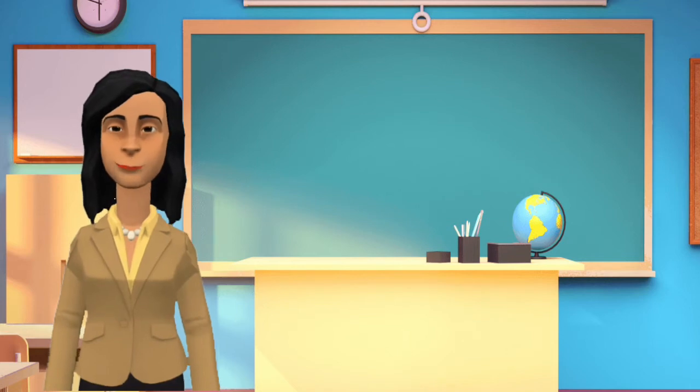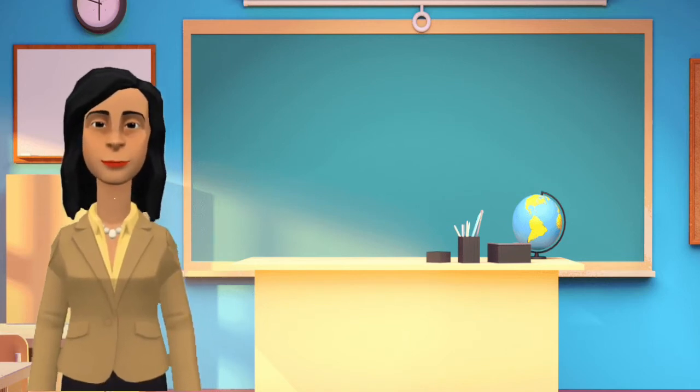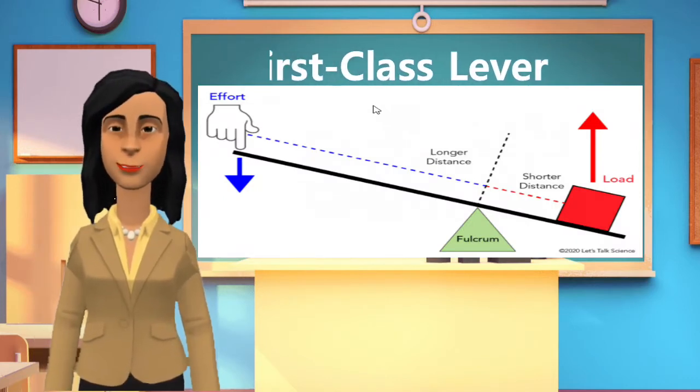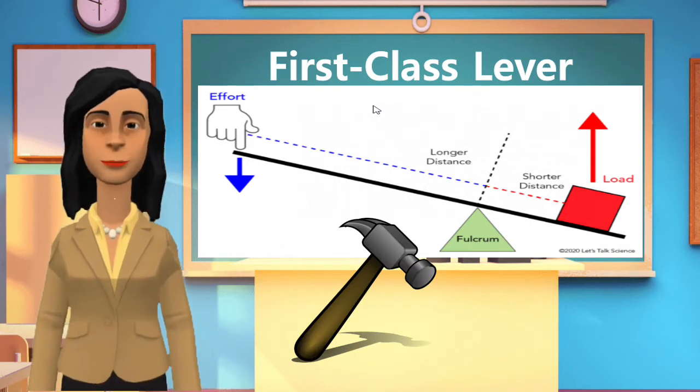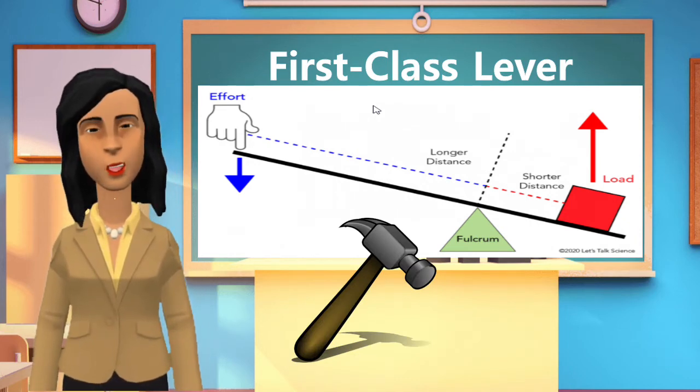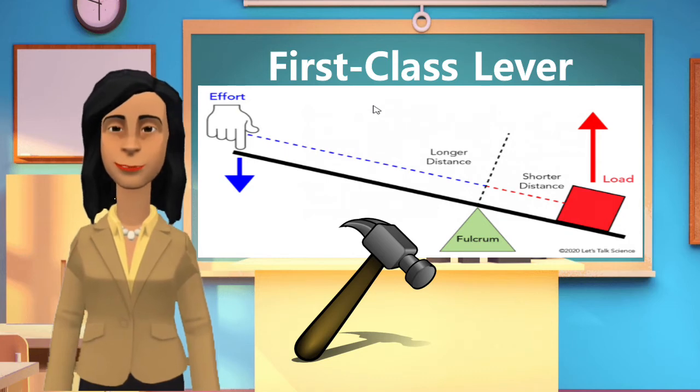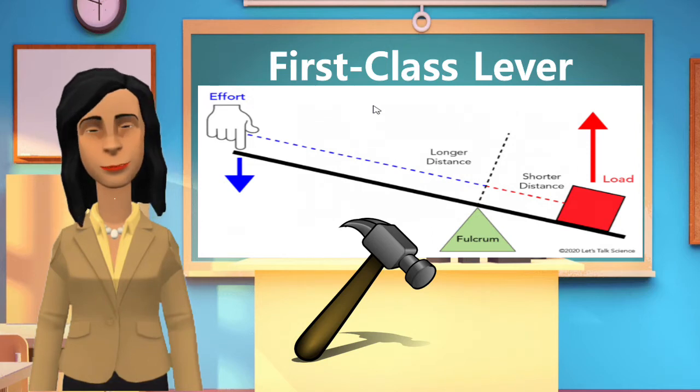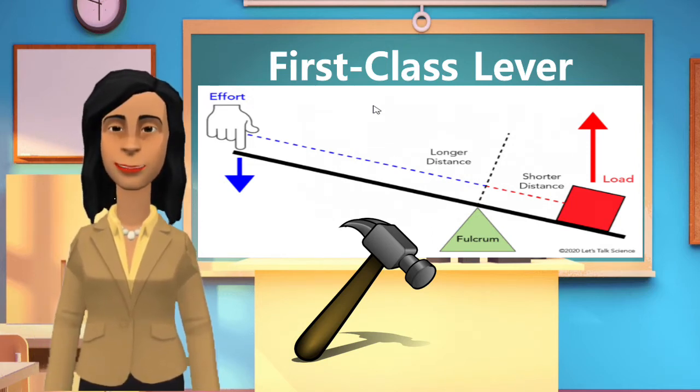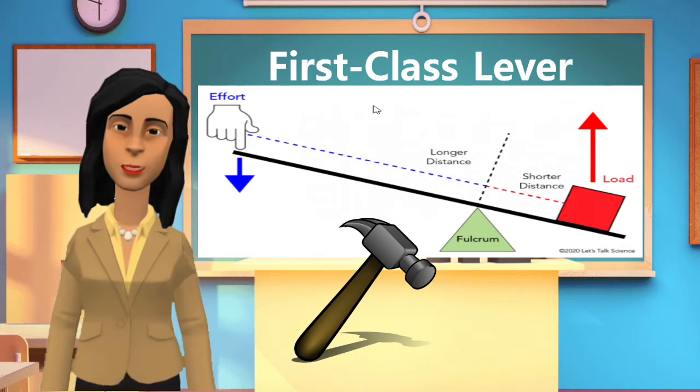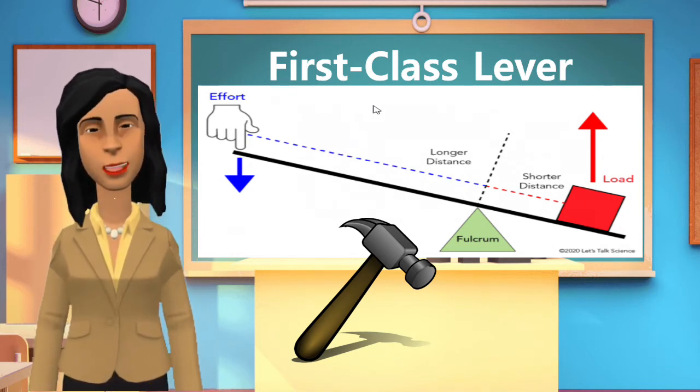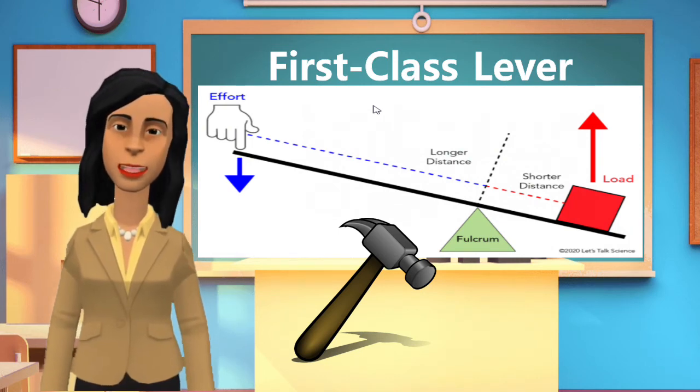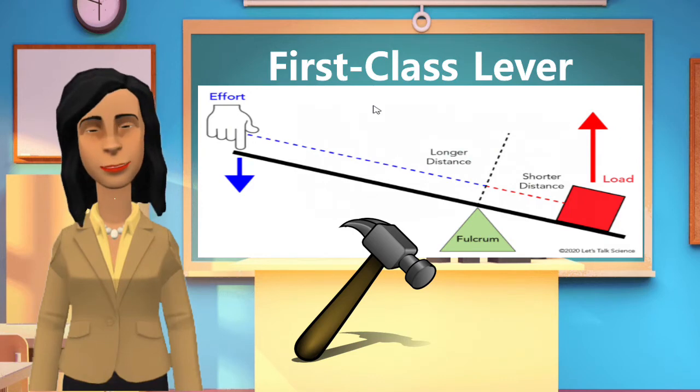First class lever is a lever with a fulcrum at the middle. The hammer which you use in removing the nail is an example of this lever. The load, which is the nail, is at one end. The fulcrum, which is the place where the head of the hammer and the surface of the wood meet, is at the middle, and the effort applied is at the handle of the hammer.